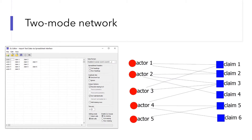Let's refresh our memory. What's a two-mode network? The network has two types of nodes. In a discourse network, one type of nodes is actors, and another type of nodes is claims. If an actor made a claim, you use a tie to connect the two nodes.